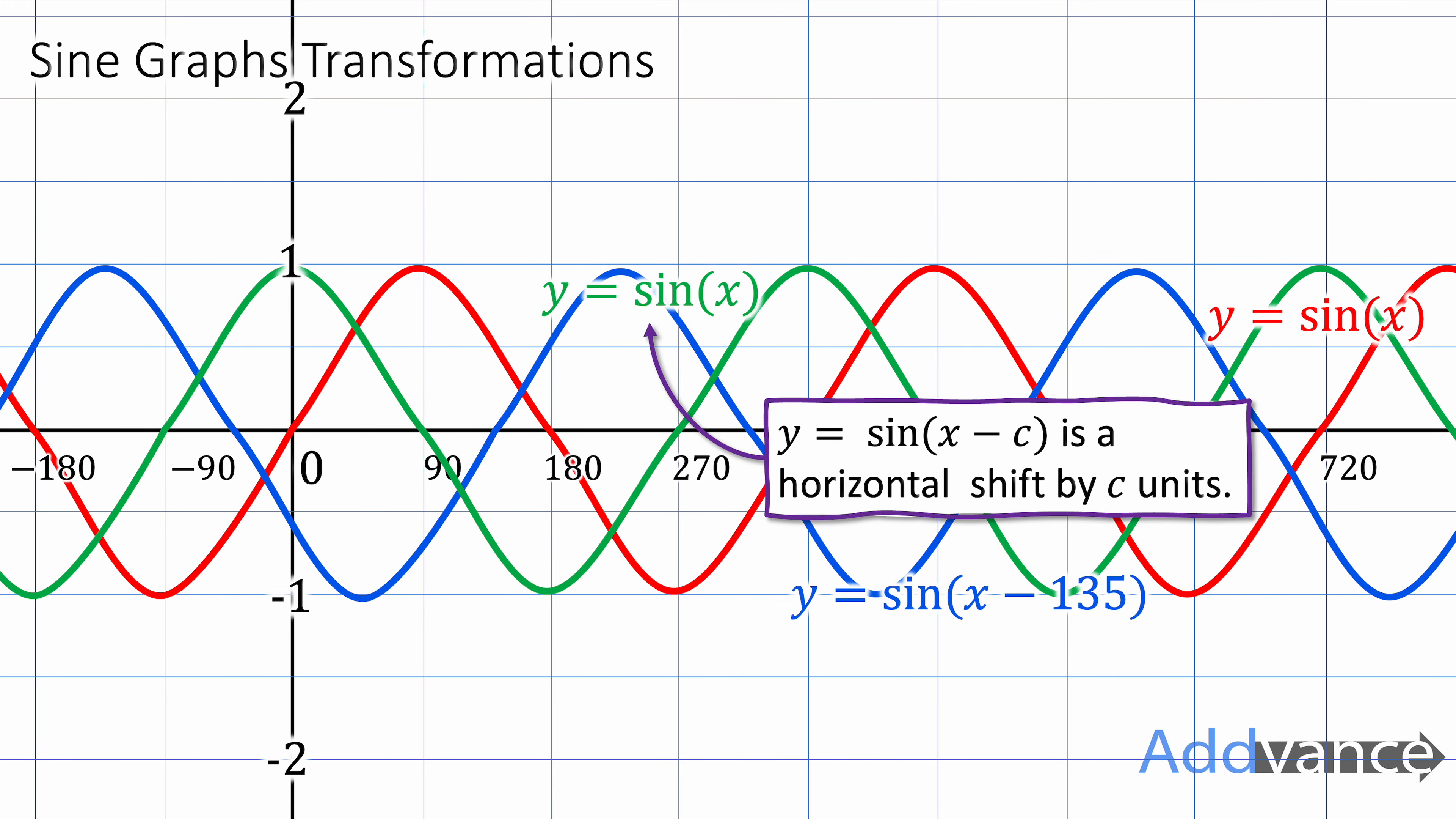And we can also subtract a number inside the brackets and that shifts it more positive. Just remember that if you're adding or subtracting inside the brackets it has the opposite effect on the graph. Subtracting a number makes it more positive and adding a number will shift the graph more negative.